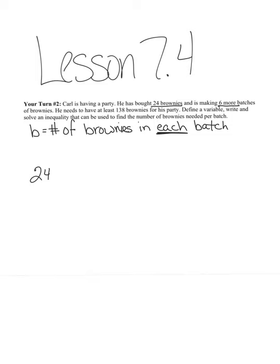Because we know that if there were ten brownies in each batch, and he made six batches, we would take six times ten. So I'm going to add to the 24 that he already has, 6b, for the number of brownies in each batch.